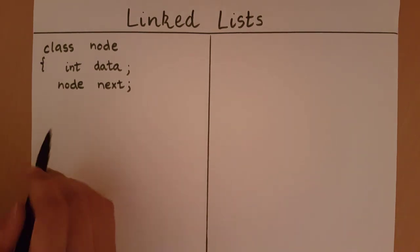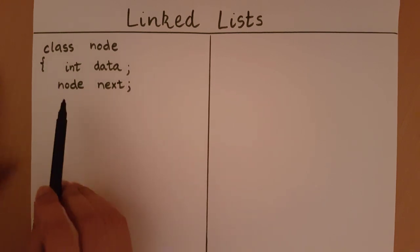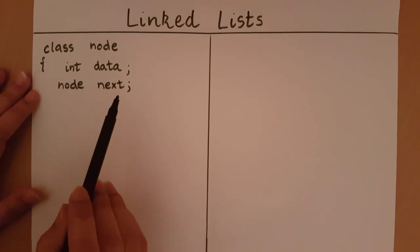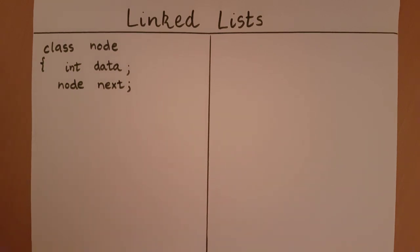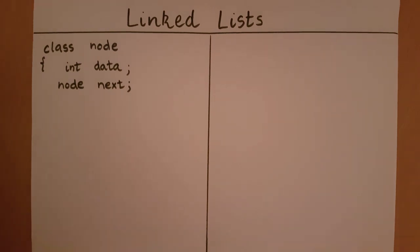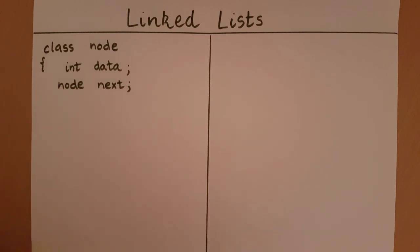Since we need to contain the address of an object of node in this class, we are going to create an object of node type. Whenever we need to reference the address of the object, we are going to use the name of the object because that is what the name of the object is going to signify. I need the address of a node, so I will create an object of node type. That's why we are going to have 'node next', and this 'next' is going to represent the address of the next node in the linked list.